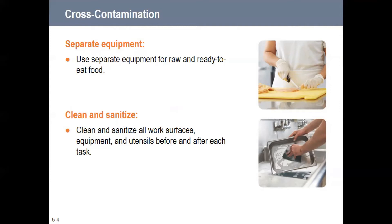Cross-contamination is one of the two big issues in the kitchen. Not thinking about the order of tasks — what to do first, second, third — means you're likely not thinking about cross-contamination either. To prevent it, use separate equipment for raw and ready-to-eat foods. Color-coded cutting boards help: yellow for poultry, red for meats, green for vegetables, so you're only cutting poultry on the yellow boards.